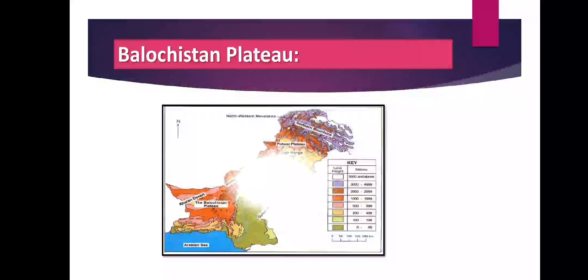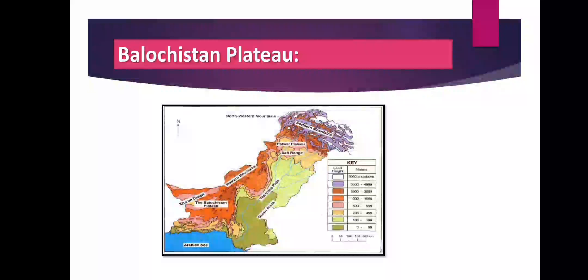Now comes the Balochistan Plateau. This is a vast plateau situated to the west of Koh-e-Sulaiman and Kirthar Range. Many other mountain ranges are also situated in this plateau. This plateau is uneven and barren — it receives very low rainfall, and therefore this region has desert-like characteristics. The location of Balochistan Plateau is clearly shown in the picture on screen.